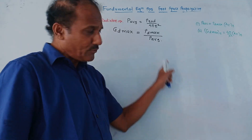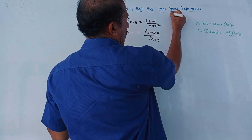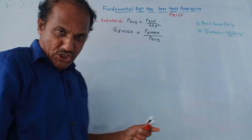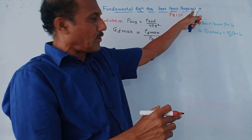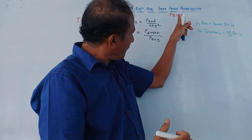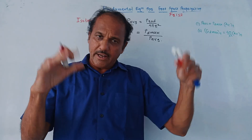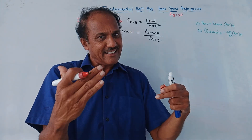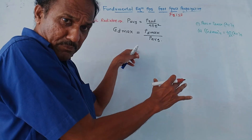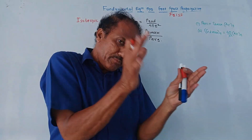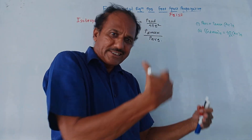Unit number one — the first topic is the fundamental equation for free space propagation, also called the free space equation. From the exam point of view, you may expect a direct question: derive the fundamental equation for free space propagation or derive the free space equation. Certain basic things related to antennas are required. This is the first part and the most important derivation. We will cover all such things in the entire unit.